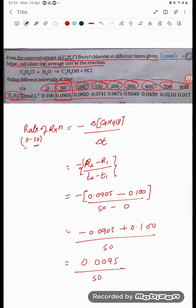It is coming to 0.00019, which equals 1.9 × 10^-4. What is the unit? It is mole liter inverse second inverse. So this is the rate, this is the answer.